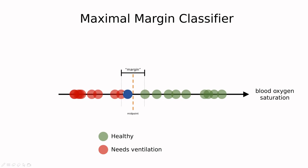In this case, if I have a new patient, here it is the blue one, and the saturation is in the left side of this margin, I'm going to say that this needs ventilation. On the other hand, if I have a patient in which saturation is in this side here, I'm going to decide that this is a healthy patient. So far, so good.